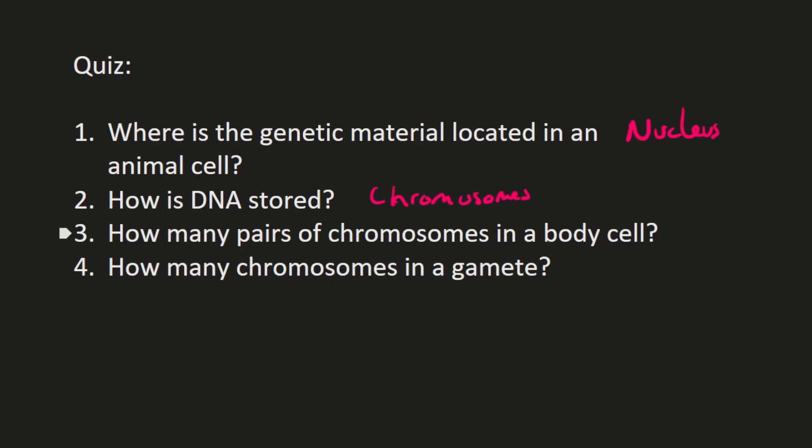Chromosomes are tightly wound structures, and they can be split up into different instructions for proteins — those are called genes. Question three: how many pairs of chromosomes are in a body cell? You have 23 pairs, or 46 individual chromosomes. Question four: how many chromosomes in a gamete? In a gamete you still have 23 individual chromosomes, but not 23 pairs. Hopefully everyone got those correct!